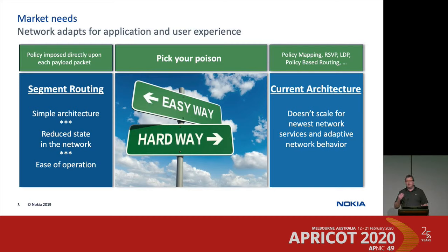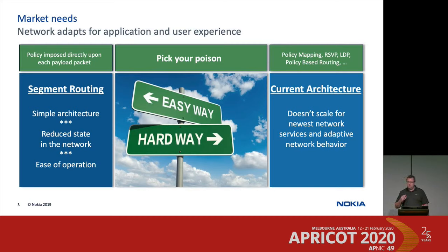Most of the customers I'm seeing from a Nokia perspective are actually running MPLS very successfully, but they're saying: 'Gunter, we are bumping into the limits of what we can do.' Nevertheless, you have the choice to go that way. The other potential is something called segment routing — the new thing people have been looking into. The plan is to reduce the amount of technologies you're using, reduce the state in your network, and make the operation of the network simpler.